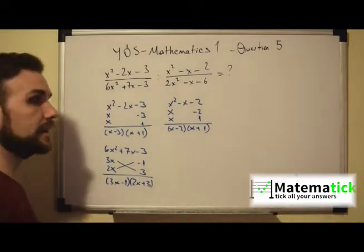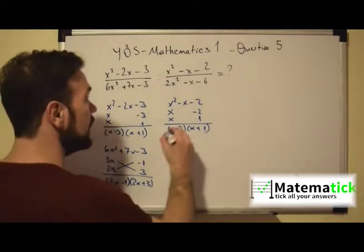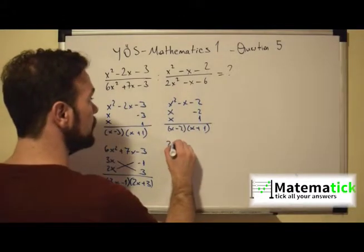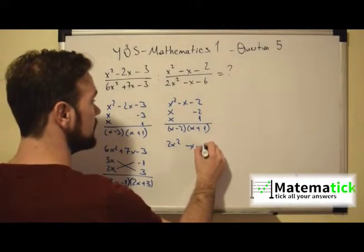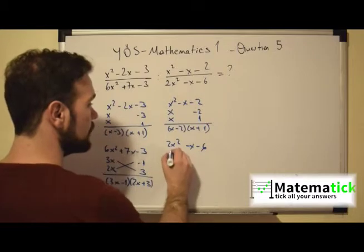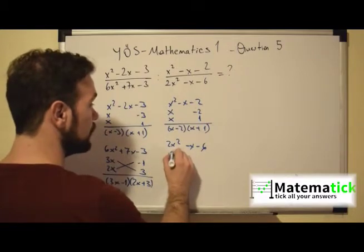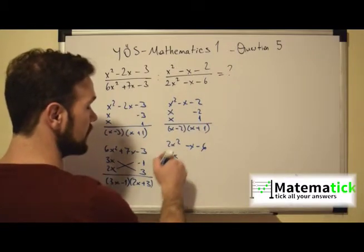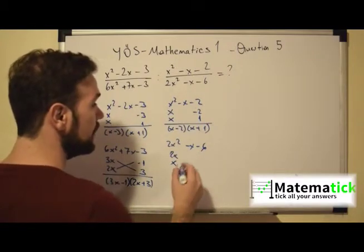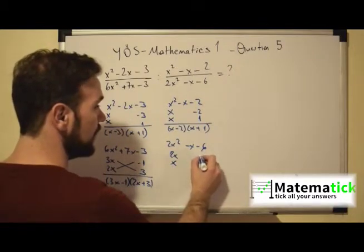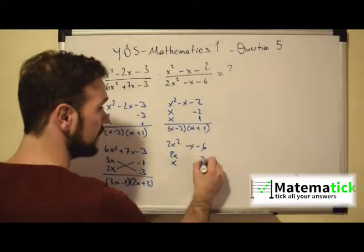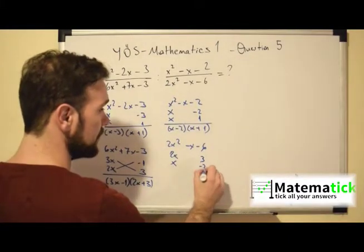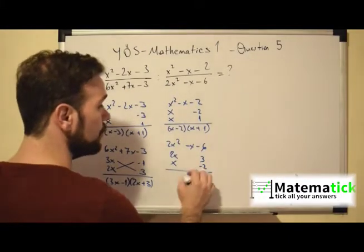Now let's look at the denominator of the second fraction: 2x² - x - 6. We have 2x times x, which gives us 2x². In this case, we have 3 times -2.